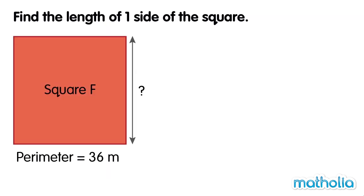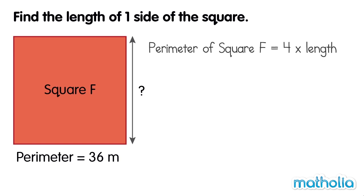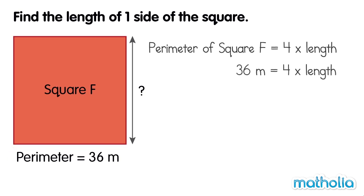Let's find the length of one side of this square. The perimeter of square F is equal to 4 times the side length. We know the perimeter is 36 m. So we can write 36 m equals 4 times the length. To find the value of one side length, we divide 36 m by 4. 36 m divided by 4 equals 9 m. So the length of one side of the square is 9 m.